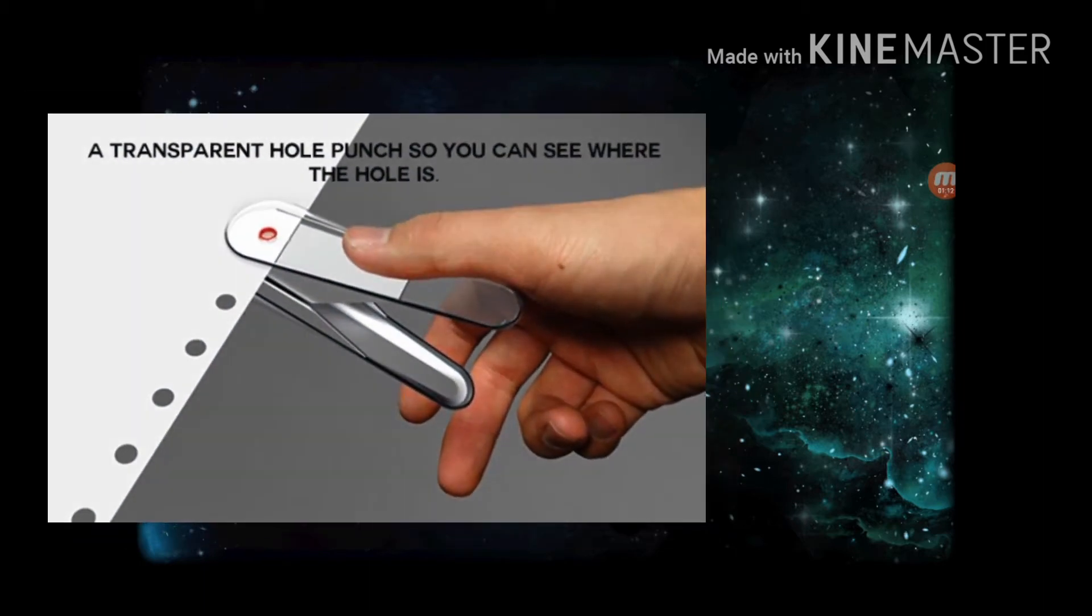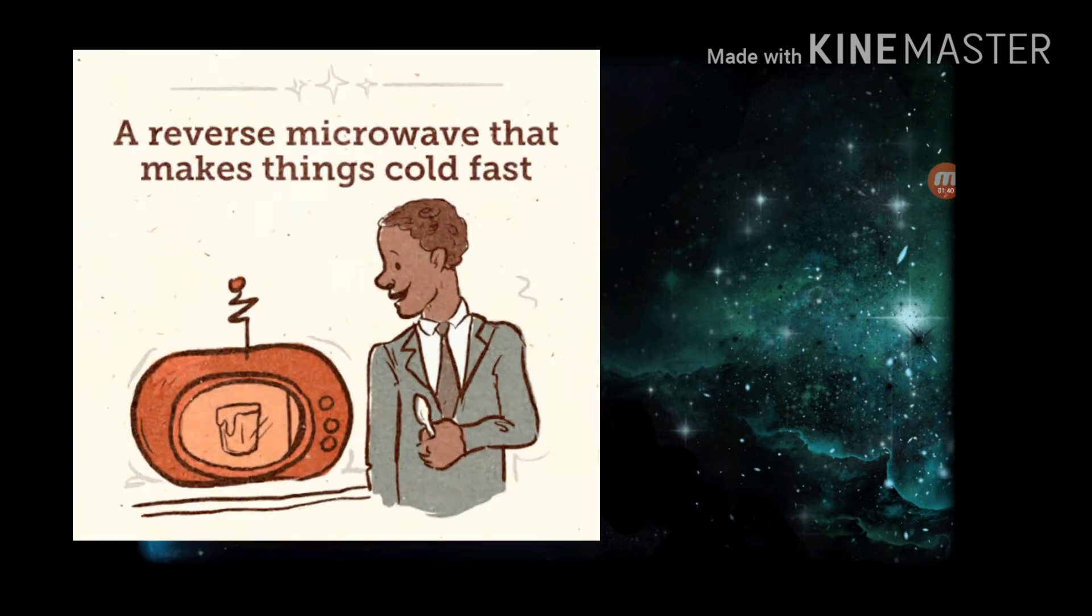This image shows a transparent stapler so you can see where the hole is. That would be very handy because a lot of people don't really know exactly where the hole is going to be. You can get it exact on the paper where you want it to be, because sometimes you need it to be in the exact place.